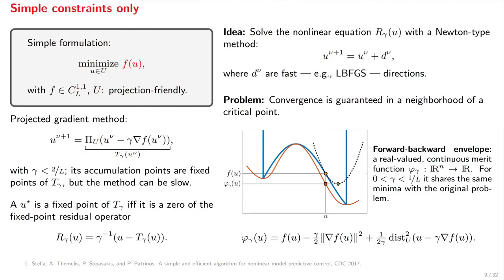convergence will only be guaranteed in a neighborhood of a critical point. What we need is a globalization method. To that end, we use the forward-backward envelope, which is a real-valued continuous merit function that shares the same minima with the original optimization problem for gamma less than 1 over L. The forward-backward envelope can be constructed by taking the constrained minimum of a quadratic approximation of the cost function, as shown in this figure.